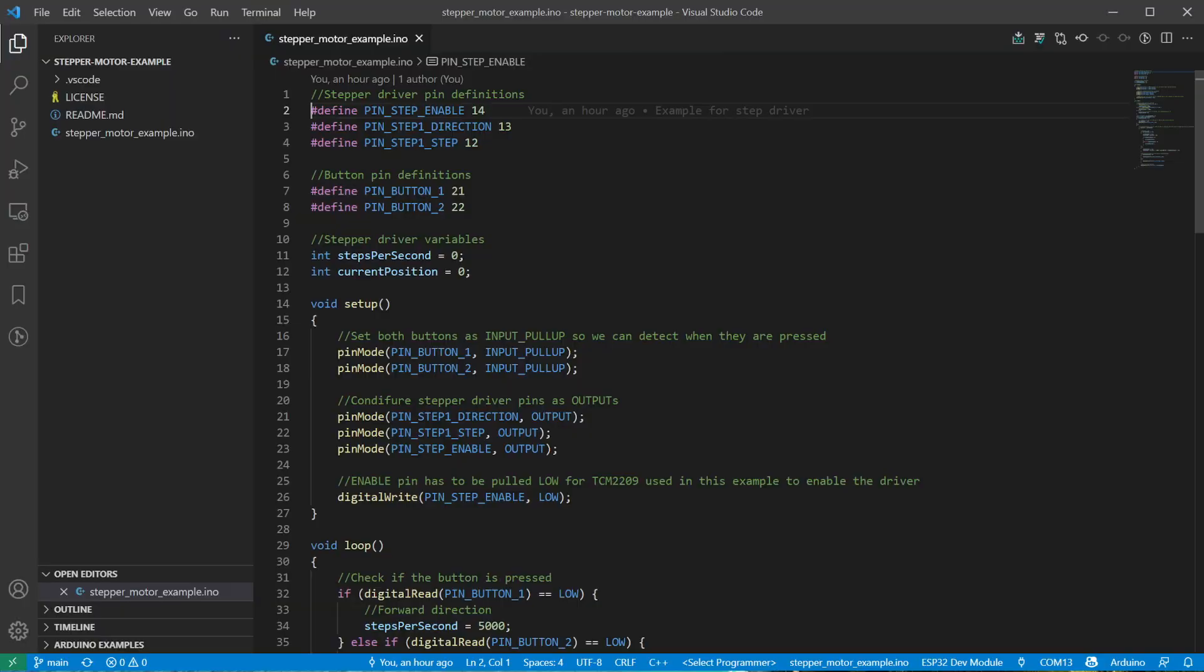The code you see on the screen is everything that's required to rotate a stepper motor with a driver left or right with the speed in steps per second. Let's have a quick walkthrough through the code to understand how it's working.